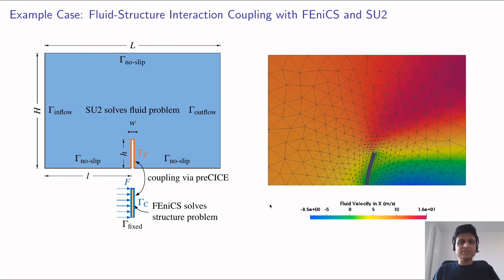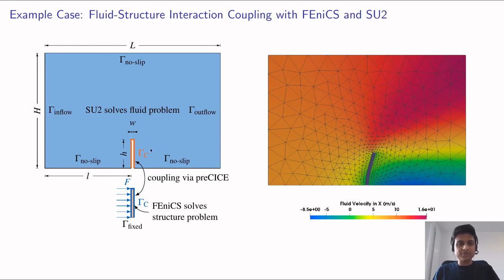The second example is a fluid-structure interaction coupling with FEniCS and the CFD code SU2. An elastic beam is placed vertically in a fluid domain, fixed at the bottom, with an inflow velocity prescribed at the left boundary. The fluid flow imparts forces onto this vertical beam, causing it to displace. FEniCS solves the structural problem — it reads forces from the fluid domain, calculates displacements, and writes the displacements back to the fluid domain. This deformation is clearly seen in the results, where the flap has deformed after a certain point in the simulation and the SU2 mesh has correspondingly deformed as well.